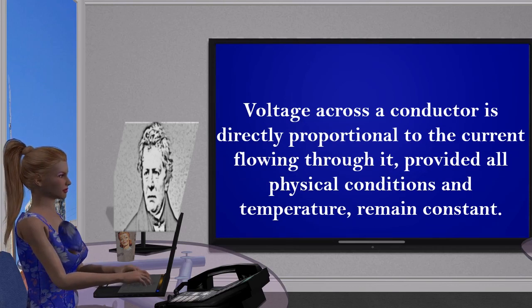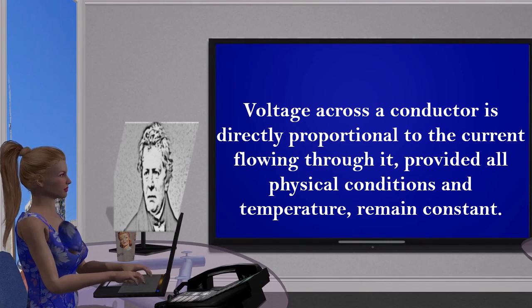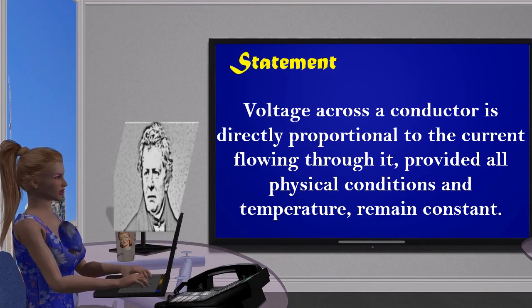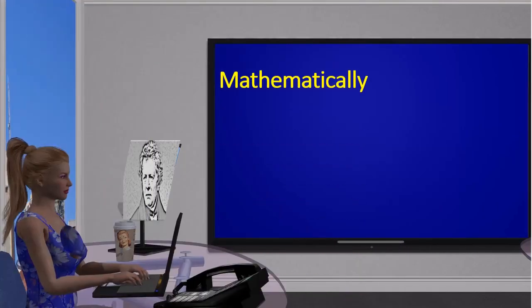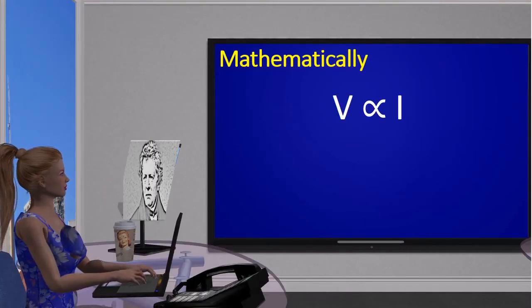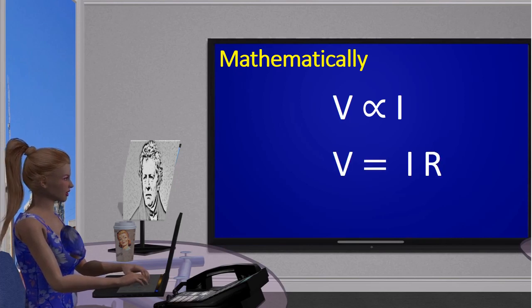This is actually the statement of Ohm's Law. Mathematically we can write V is directly proportional to I. By removing the proportionality sign, we obtain a constant R, which is called the resistance of the conductor.